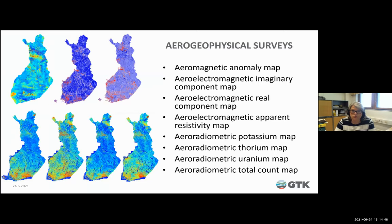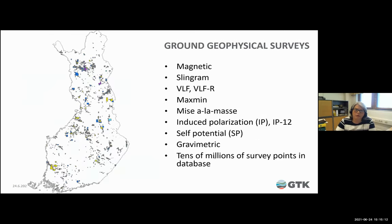We have aero geophysical surveys covering the whole country — aeromagnetic, aero-electromagnetic, and aero-radiometric maps available in Hakku, along with grids. We also have ground geophysical surveys with tens of millions of survey points in the database. Methods include magnetic, slingram, VLF, MaxMin, Misé-à-la-masse, induced polarization, self-potential, and gravimetric.